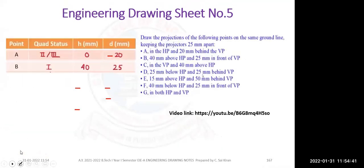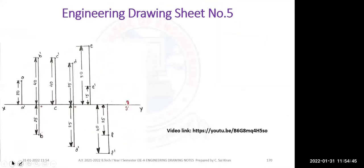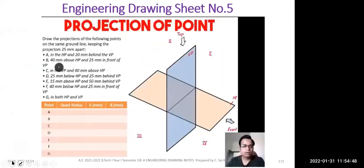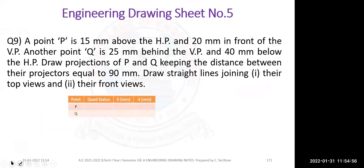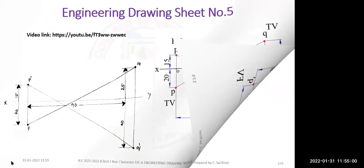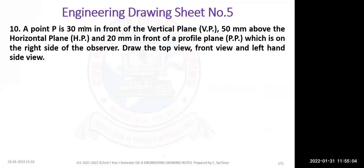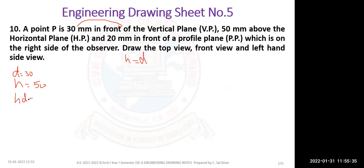That is about the seventh problem. Moving to the tenth problem — it is similar but not equidistant: H is not equal to D. In the previous problem H equaled D giving 49.5 mm, but here the values are different: 30 mm in front of VP so D equals positive 30, and 50 mm above HP so H equals positive 50.